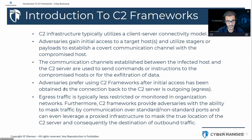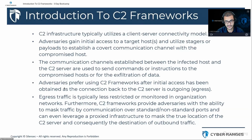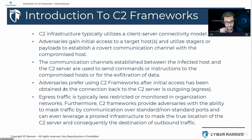Adversaries gain initial access to a target host or set of hosts and utilize stages or payloads to establish a covert communication channel with the compromised host. Those communication channels between the infected host and the C2 server are then used to send commands or instructions and facilitate data exfiltration. Adversaries prefer utilizing C2 frameworks after initial access has been obtained, as the connection back to the C2 server will be egress traffic. Importantly, C2 frameworks are not used as initial access or exploitation frameworks per se.